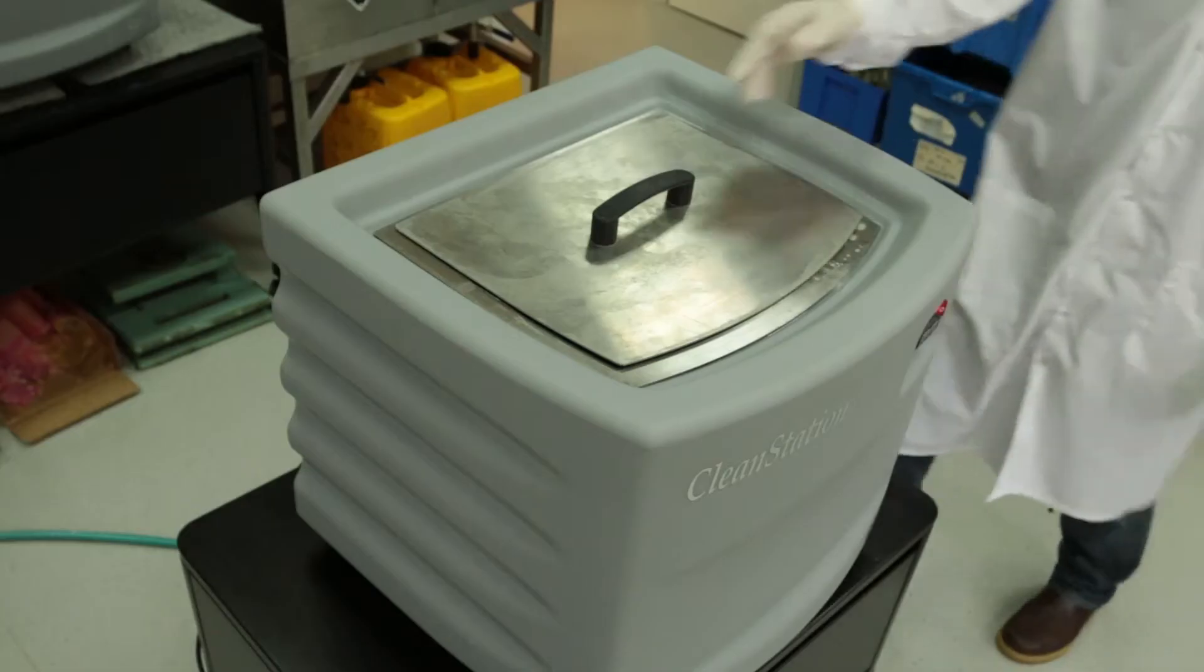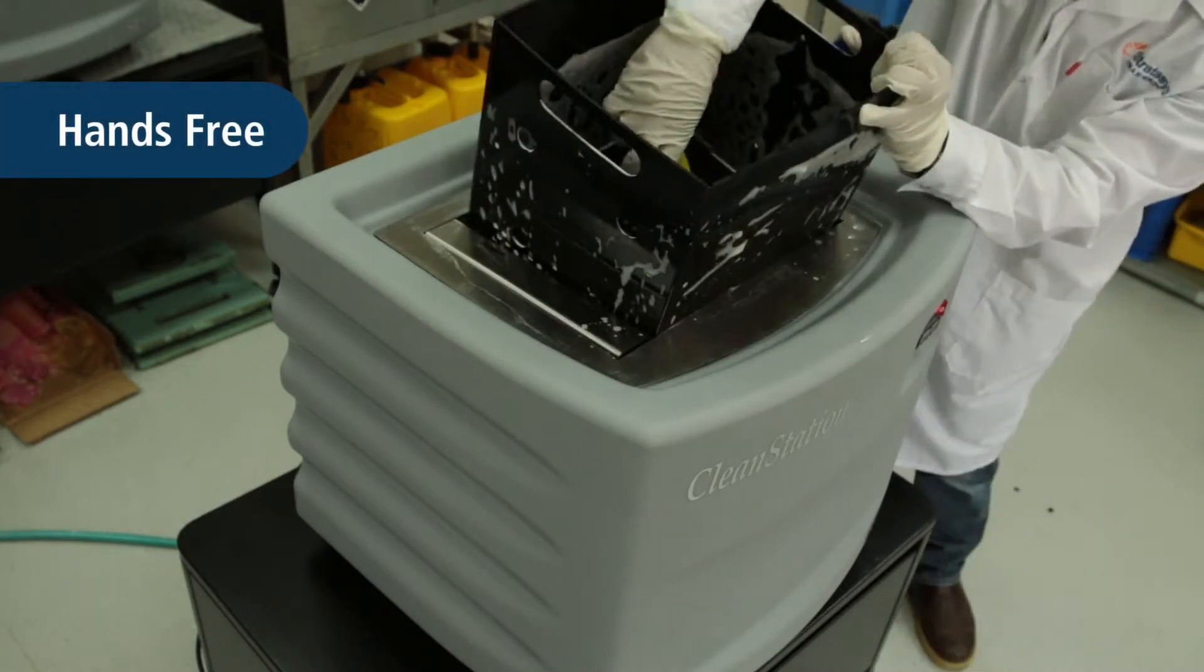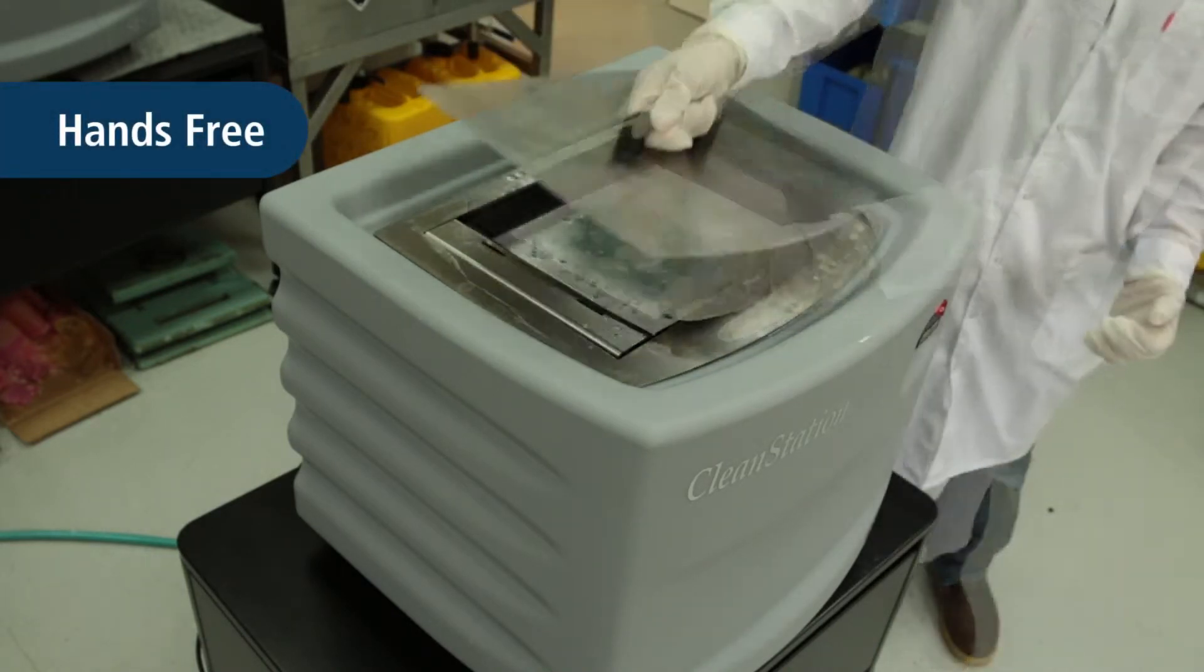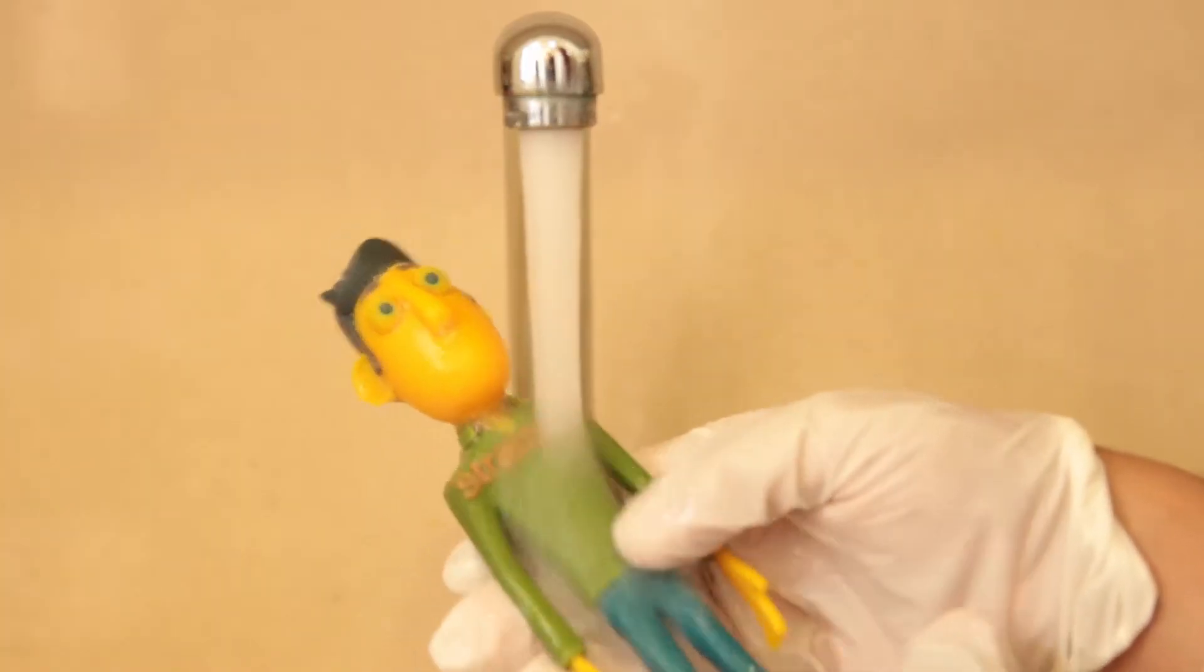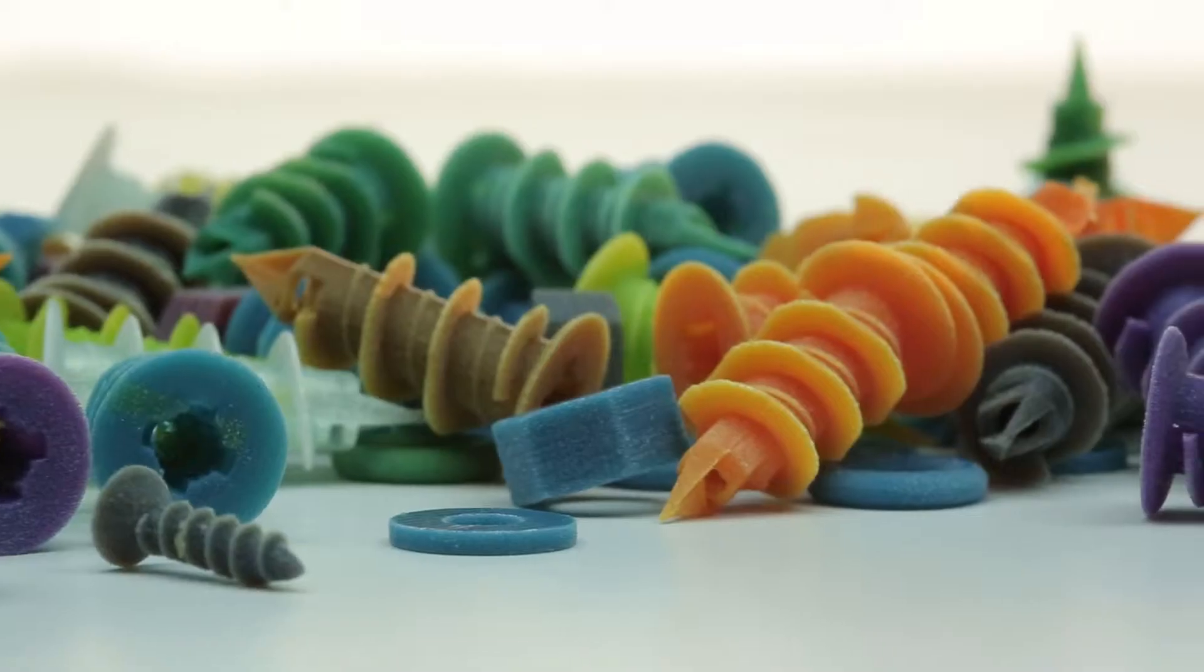Let's begin with the hands-free method. Place the 3D printed part inside the cleaning solution. Once the support material has been dissolved, rinse the part in tap water. This process is especially helpful for large batches of small parts.